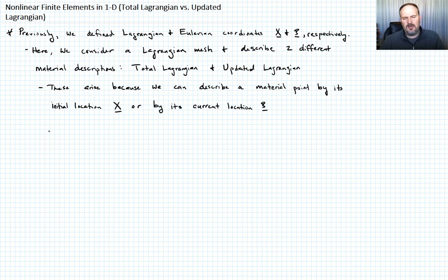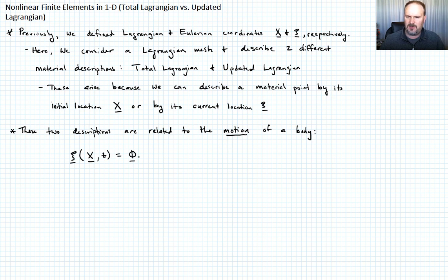So these two descriptions are related to the motion of a body. We can relate these: the current position C of the point X at a given time is just equal to some mapping phi, which describes the translation of that point. So pretty basic, but we're just describing it now as a mapping.